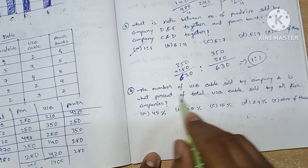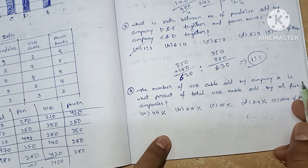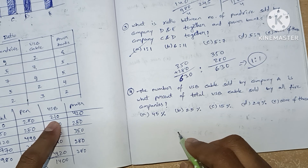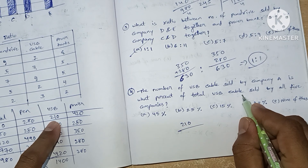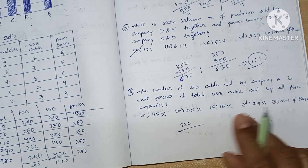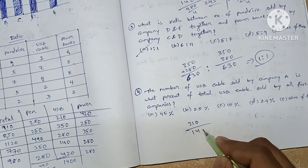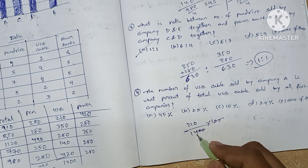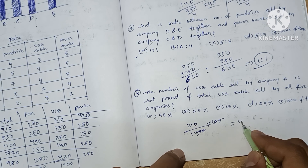Question number four: the number of USB cables sold by Company A is what percent of the total USB cables sold by all companies? USB cables sold by A = 210. Total USB cables = 1400. So: (210 / 1400) × 100 = 15 percent.